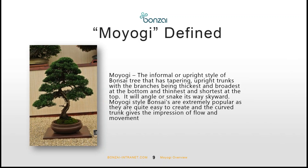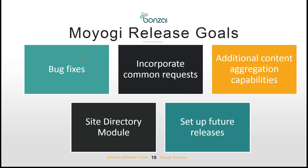Since this was our first release, we decided to name it after the most typical type and style of Bonsai tree. We had a few release goals for this version. As we've started rolling out Bonsai to clients, there's been a whole range of common requests we've tried to feed back into the product — a great reason why having an intranet product like Bonsai really works. You get updates every six months with new features and bug fixes, and as an organization you're getting best-of-breed intranet capabilities from what other organizations think as well.